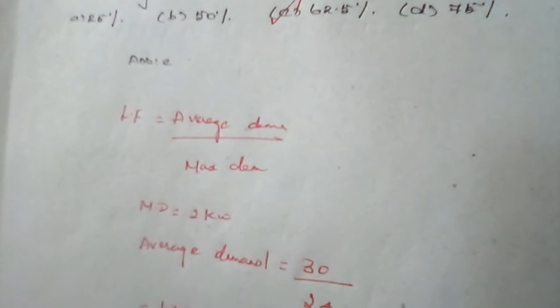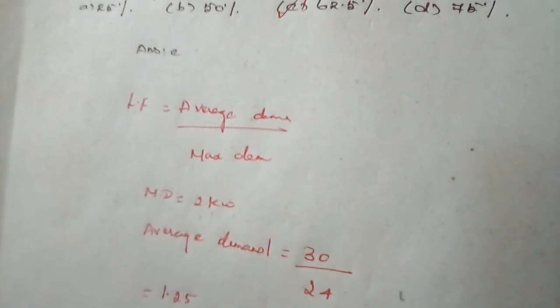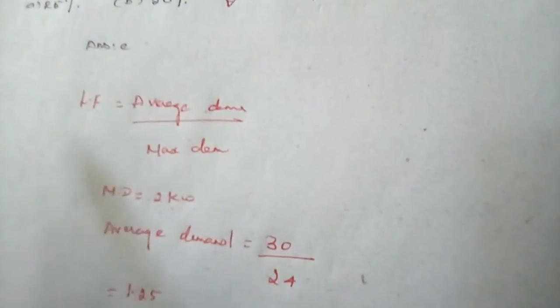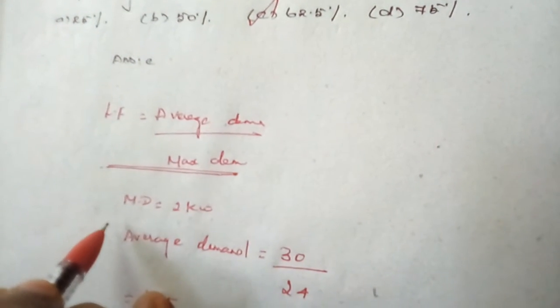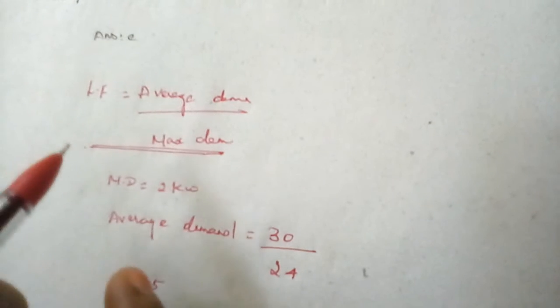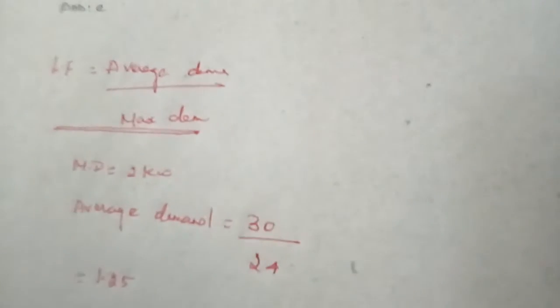We have now discussed two different methods for finding load factor — one using the load pattern given for specific hours, and another using daily energy consumption. In either case, you find the load factor using the given data, and the load factor will always be less than unity.